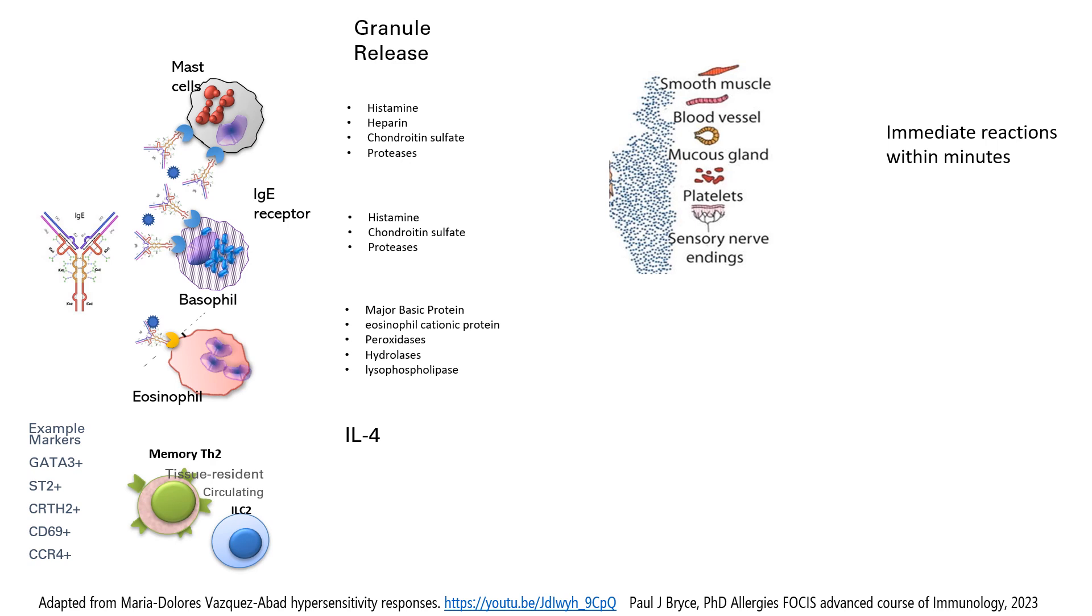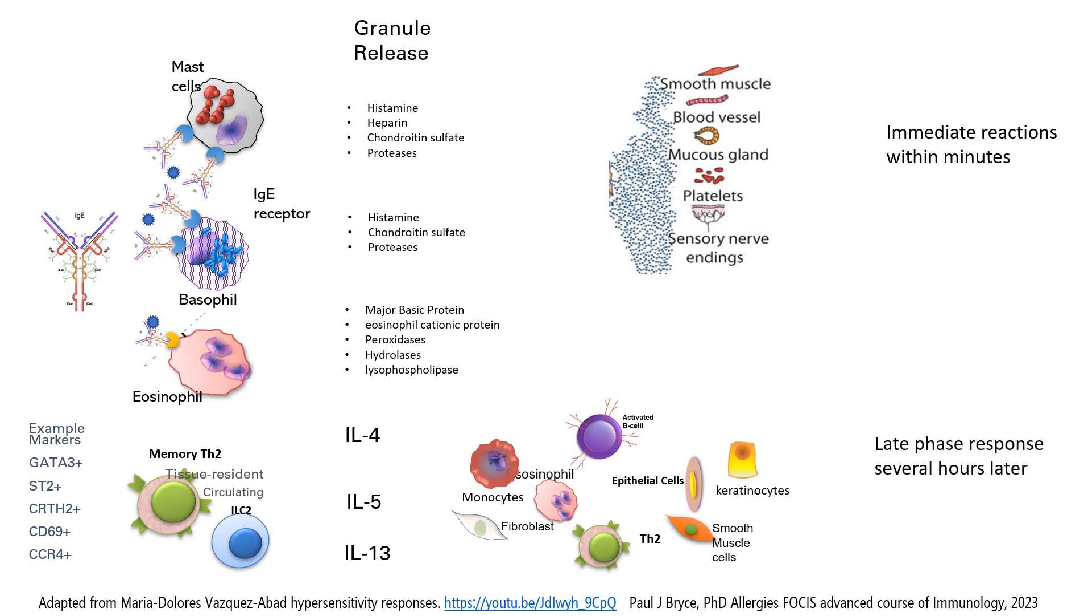They produce, instead of granule release, they produce cytokines, typically interleukin-4, interleukin-5, and interleukin-13. These three cytokines bind receptors in a variety of cells, and that's why they cause many different symptoms associated also to allergic responses or type 1 hypersensitivity responses.